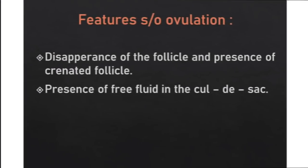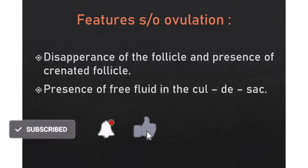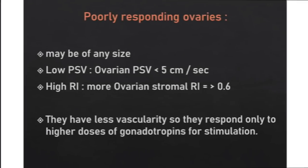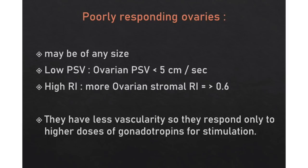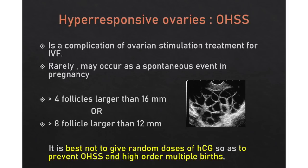Features of ovulation are disappearance of the follicle, presence of a granulated follicle, and presence of free fluid in the cul-de-sac. Poorly responding ovaries may have any size with low PSV and high RI, so clinicians need high doses of HCG for stimulation. Ovarian hyperstimulation syndrome is seen in hyperresponsive ovaries and is a complication of ovarian stimulation for IVF, with significant risk for miscarriages. It is better to avoid random doses of HCG: more than 4 follicles larger than 16 mm or more than 8 follicles larger than 12 mm indicates ovarian hyperstimulation syndrome.